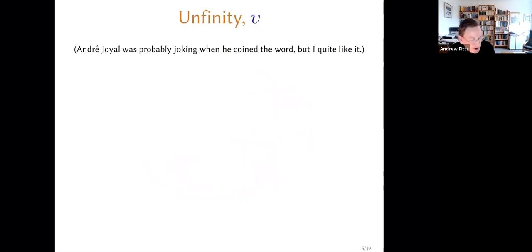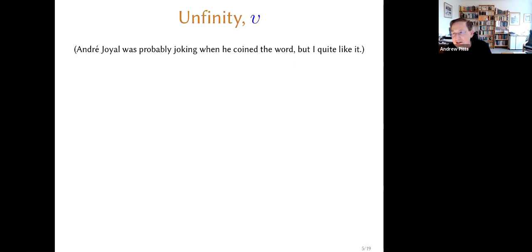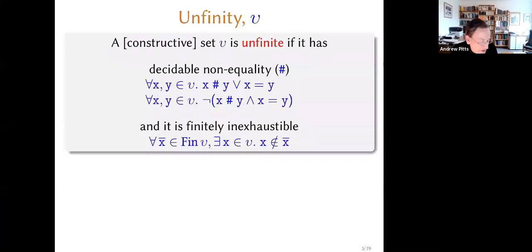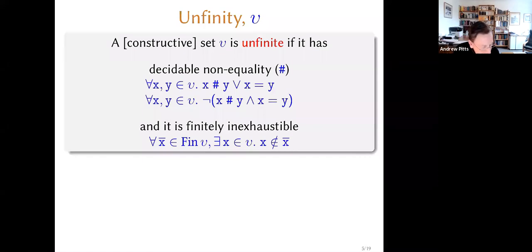So 'infinity' is not a standard word. André Joyal coined the term — I think he was making a joke when he did it — but actually I quite like the word. If you're a classical mathematician working with classical logic and the law of excluded middle, infinity is just a typo for infinity — you can't see any difference classically. But what I mean by infinity constructively speaking is that, first of all, an infinity set has a decidable equality, so we have a non-equality relation which is the Boolean complement of equality. And then the important thing is that the set is finitely inexhaustible.